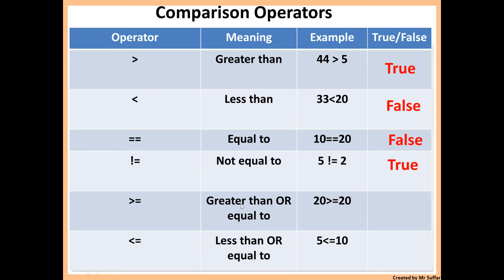Then we have greater than or equal to. Here we have two conditions, and as long as one of them is true, then the overall result is true. For example, is 20 greater than 20? No, that would be false. But then it says or equal to — is 20 equal to 20? Yes, that's true, so because the second condition is true it evaluates to true overall. Less than or equal to works exactly the same way. So 5 is less than or equal to 10 — because 5 is less than 10, that would also be true.